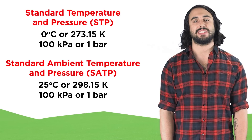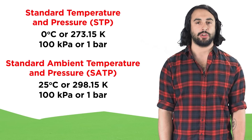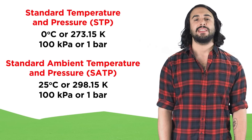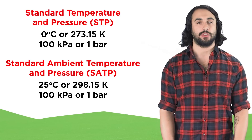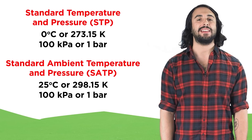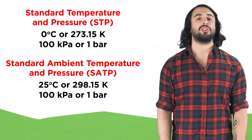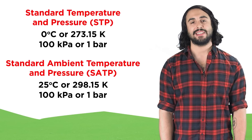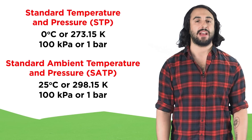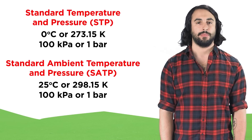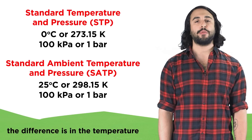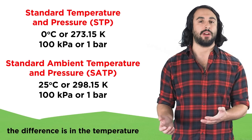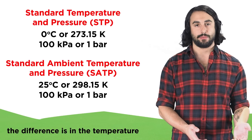Another set, called Standard Ambient Temperature and Pressure, abbreviated as SATP, sets the temperature at 25 degrees Celsius, or 298.15 Kelvin, which is roughly room temperature, and pressure is once again set at 100 kilopascals, or one bar. So the difference between these two sets is the difference between the freezing point of water and room temperature.